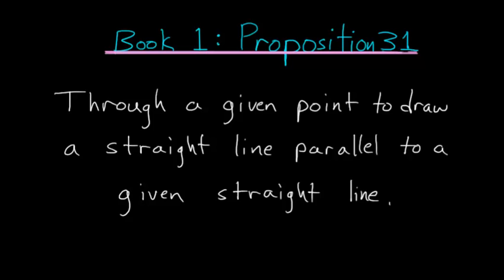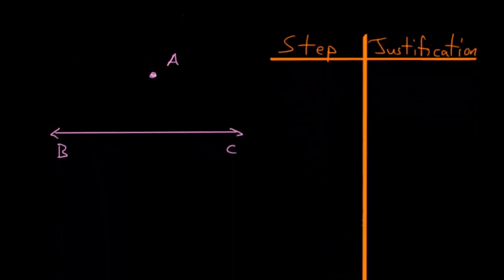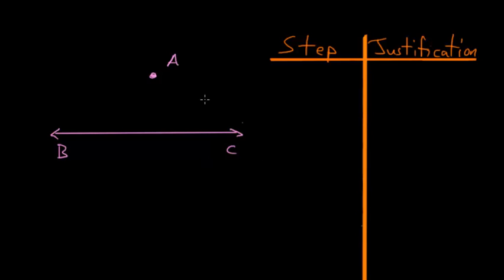For Book 1, Proposition 31 of Euclid's Elements: through a given point to draw a straight line parallel to a given straight line. We start with some line, in this case BC, and some point A.